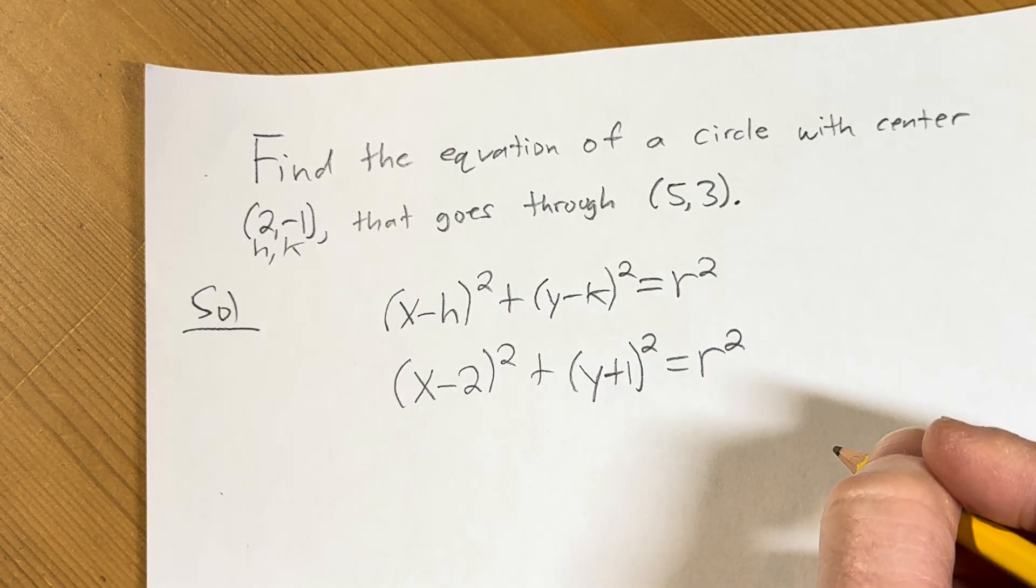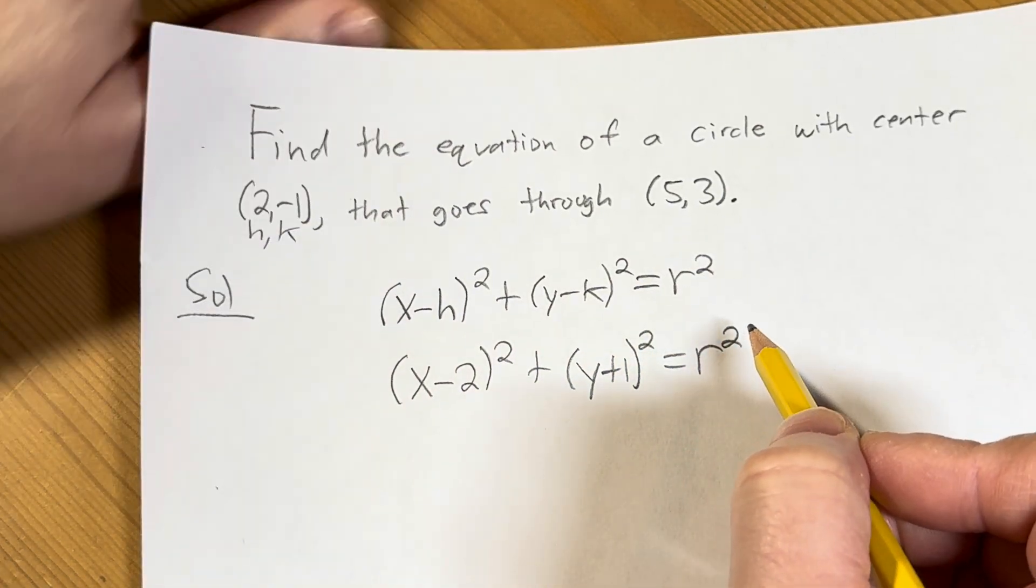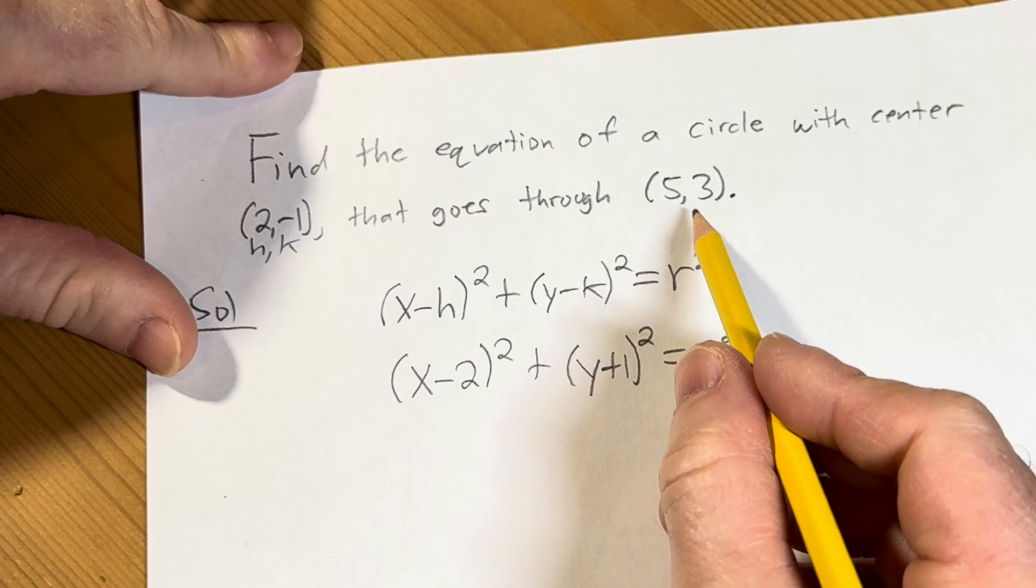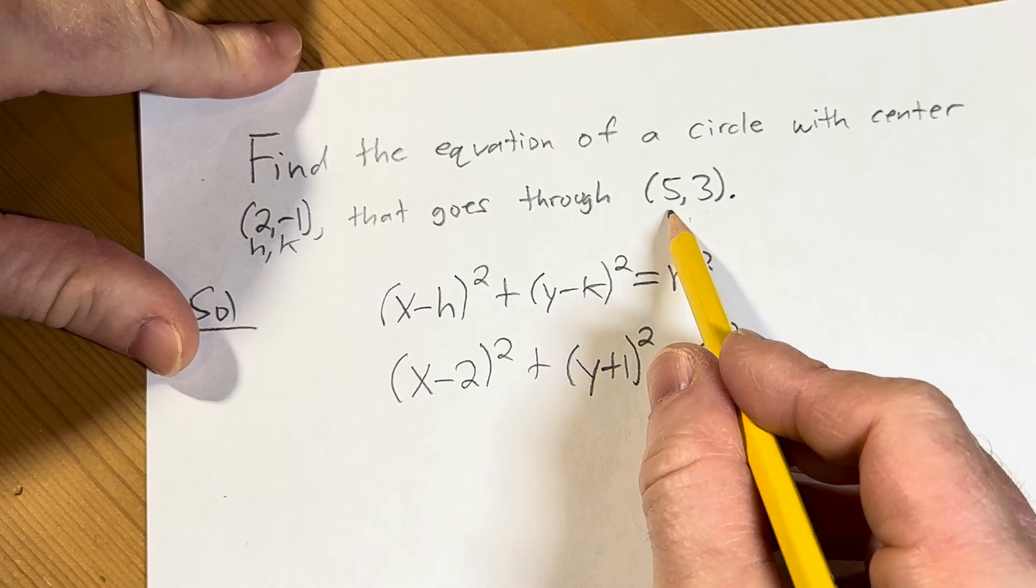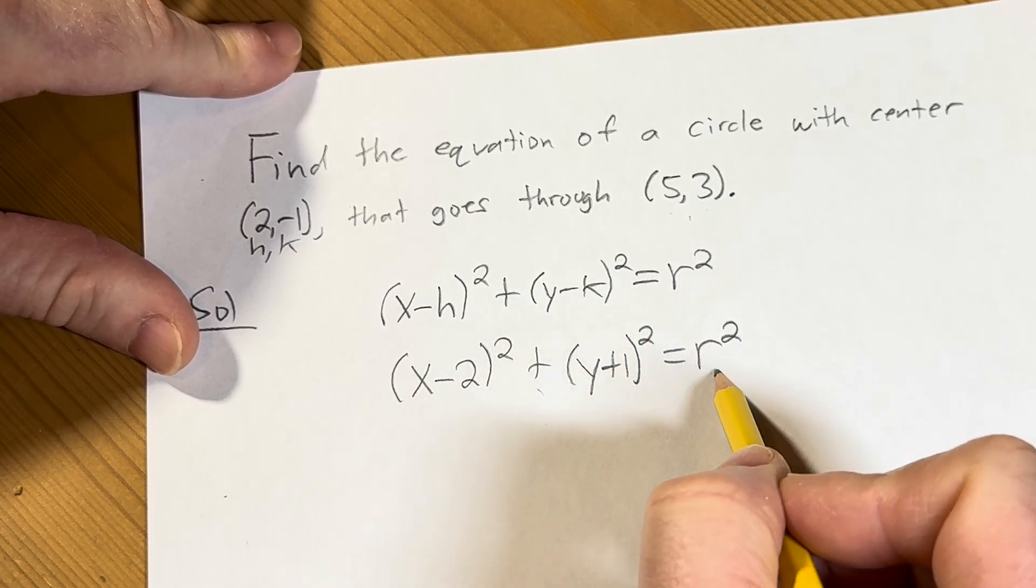So now we just have to find r. We have to find r. So what we can do now is we can just take these numbers, 5 and 3, and plug them in for x and y, and we can solve for r.